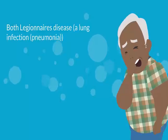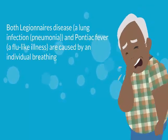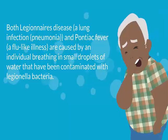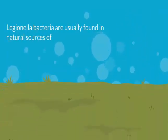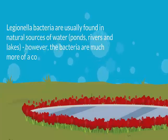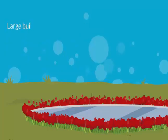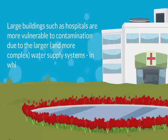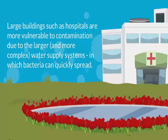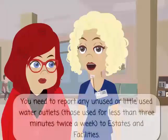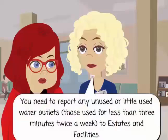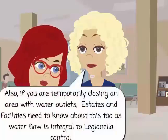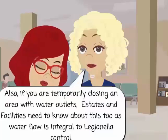Both Legionnaires' disease and Pontiac fever are caused by breathing in small droplets of water contaminated with Legionella bacteria. Legionella is a bacteria usually found in natural sources of water, and it only becomes a concern when it enters artificial water supply systems. Large buildings such as hospitals are more vulnerable due to larger, more complex water systems. You need to report any unused or little-used water outlets to estates and facilities, and inform them if you are temporarily closing an area with water outlets, as water flow is integral to Legionella control.